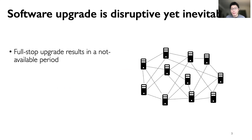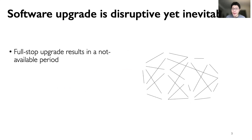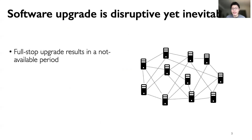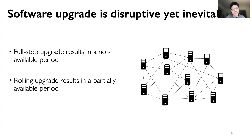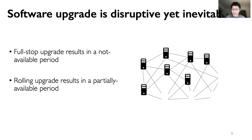The first type of upgrade procedure is a full-stop upgrade, where the whole cluster goes down and every node is restarted running a newer version of the software, and this results in a not-available period. The second type is rolling upgrade, where nodes take turns to shut down and restart with a newer version, and this results in a partially available period.